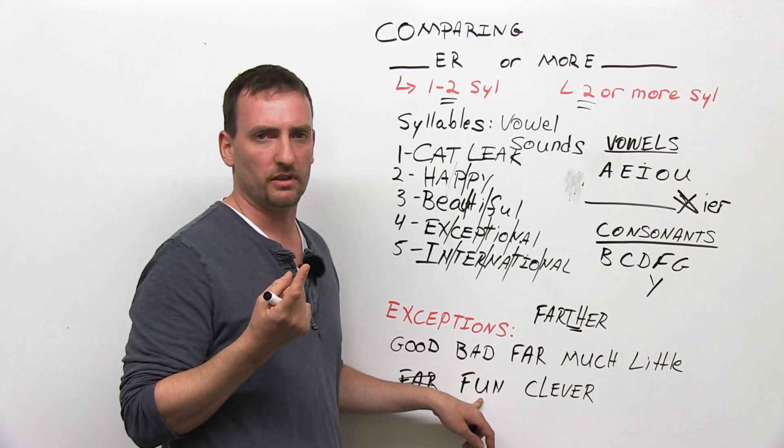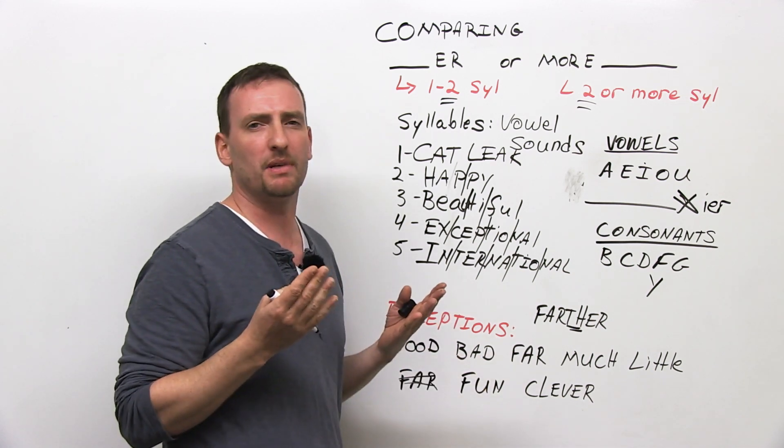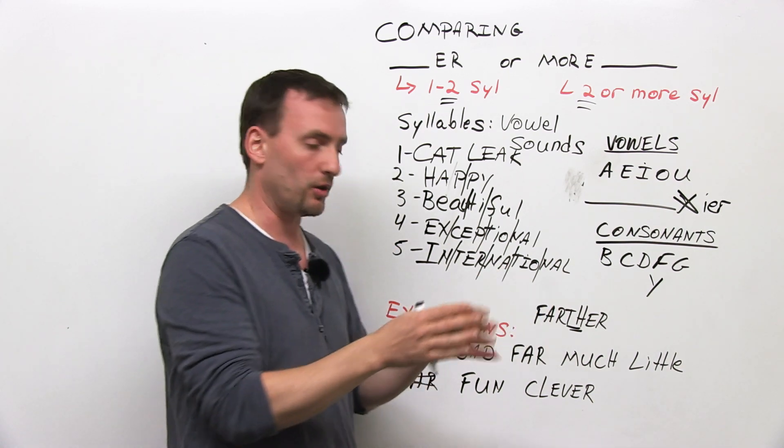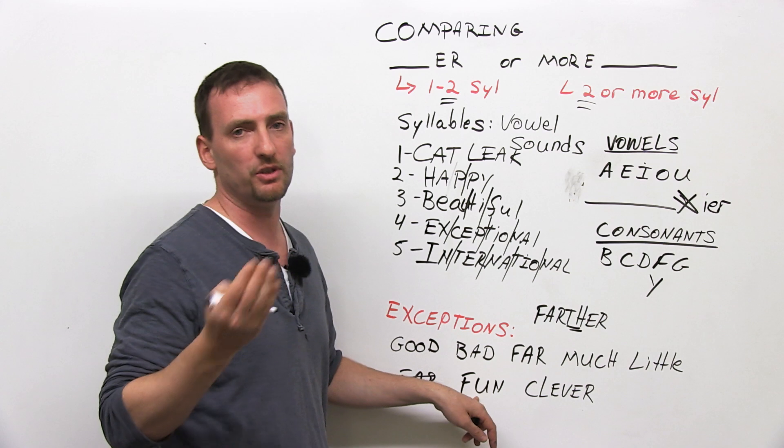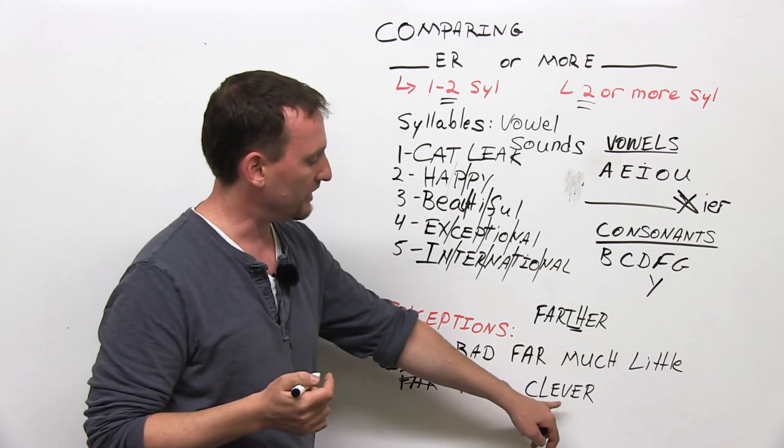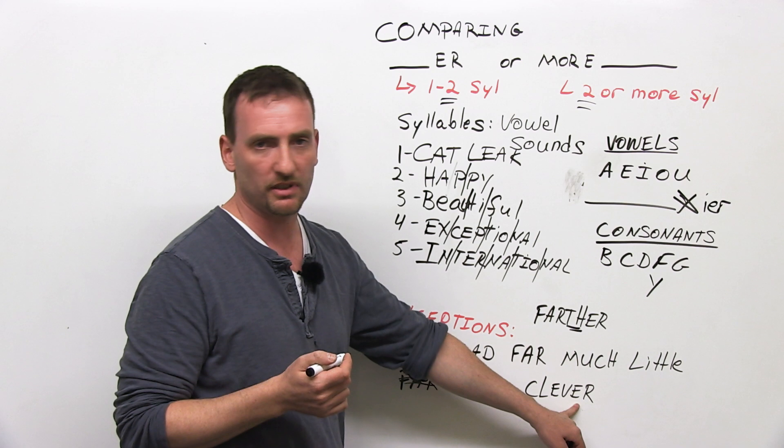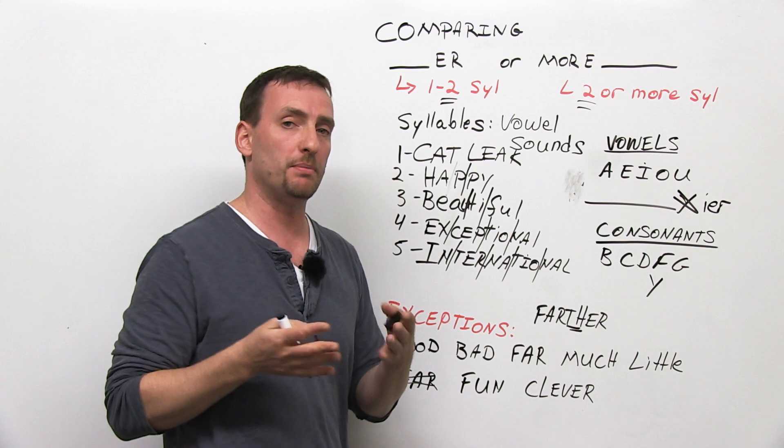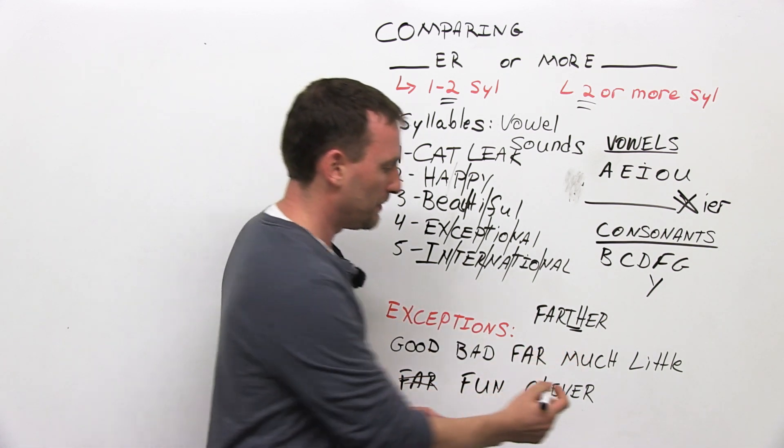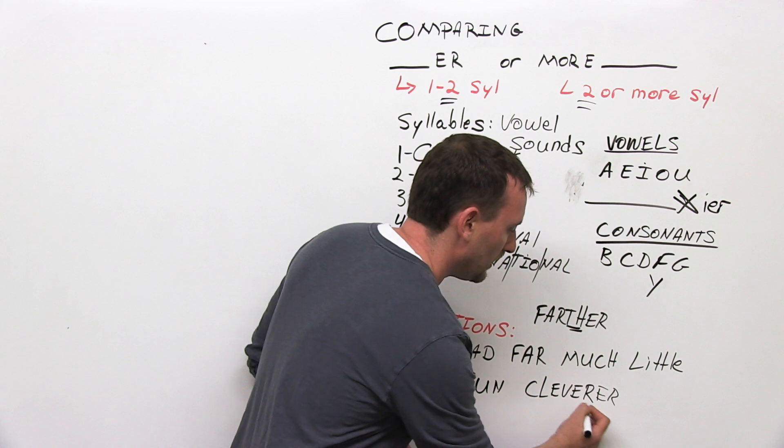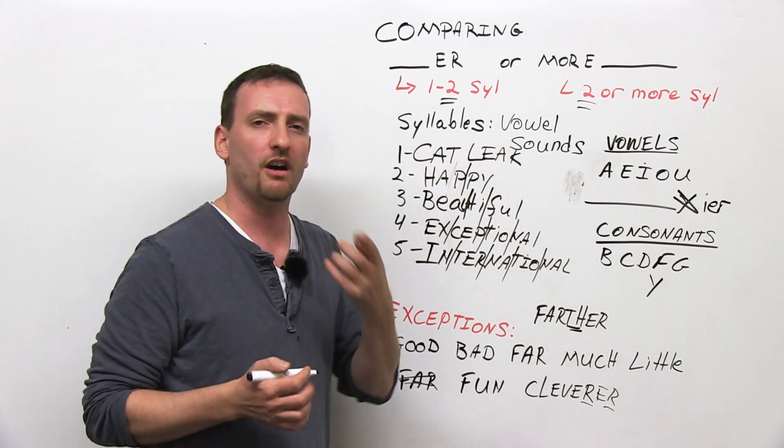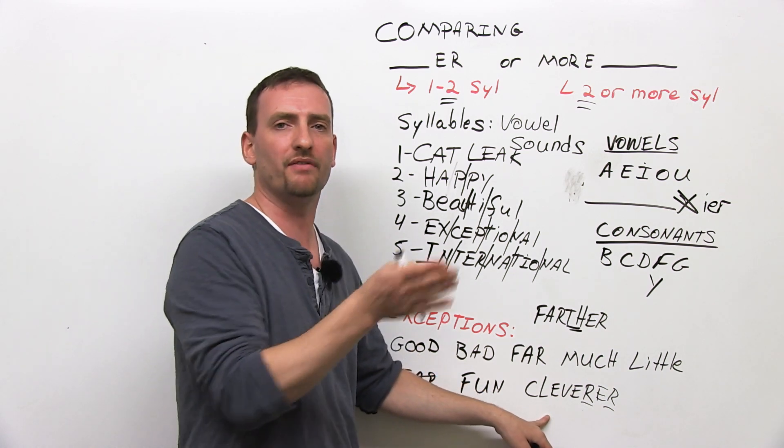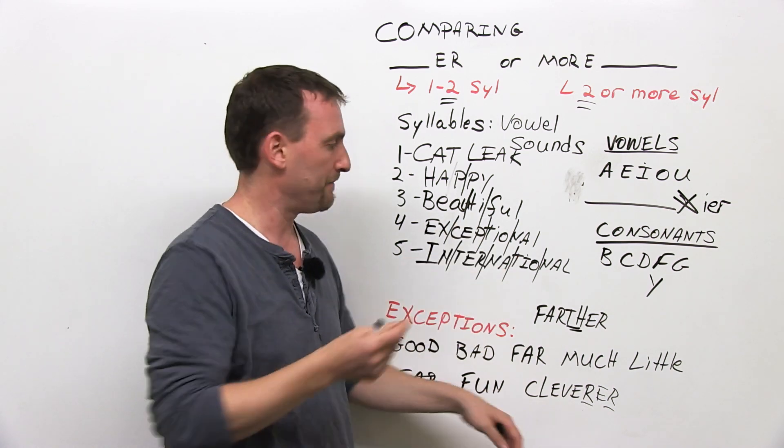Fun. Fun is a one-syllable word, but you will never hear anybody say funner. Why? Because it sounds like funnier. So this is an exception. We usually say more fun. Now, here's an example of a two-syllable word that ends in a consonant. So you think cleverer. Now, some people will say cleverer, but because of the R-R ending, it's a little bit hard to say. So many people will say more clever. He is more clever than she is.